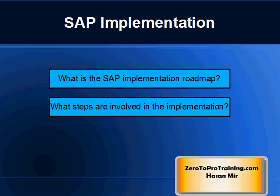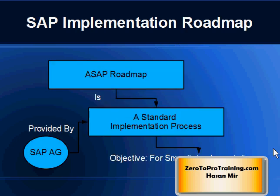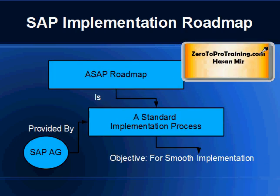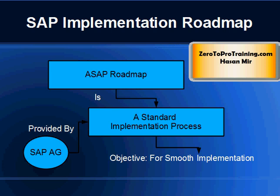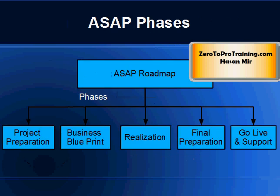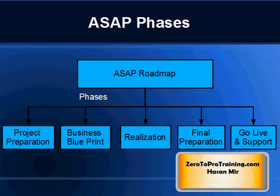What steps are involved in it? The SAP Implementation Roadmap is a standard process provided by SAP AG. Their goal is a smooth implementation. The formal name of the process is ASAP Roadmap, and the ASAP Roadmap consists of five phases.